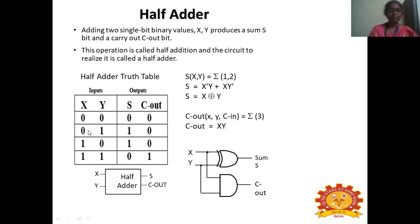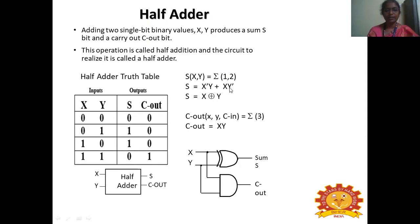Let us calculate the min terms for sum and carry. For sum, the min terms are 1 and 2. For carry, it is 3. For min terms 1 and 2, the expression is X'Y + XY', which is an XOR function — so X XOR Y. For carry, it is min term 3, that is X AND Y. So the logic circuit realized is an XOR gate for sum and an AND gate for carry: X XOR Y is sum, X AND Y is carry.